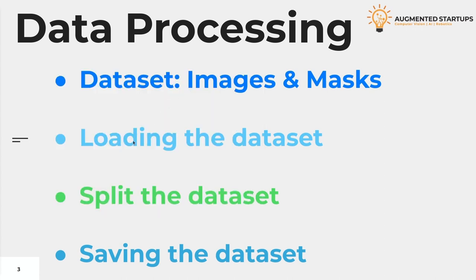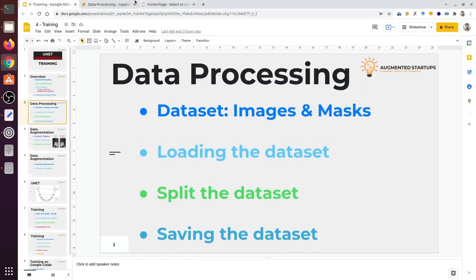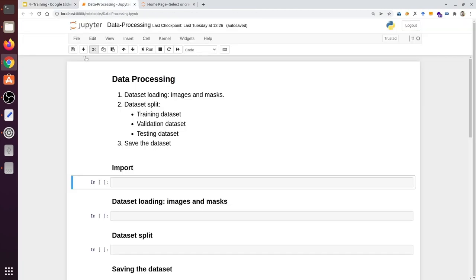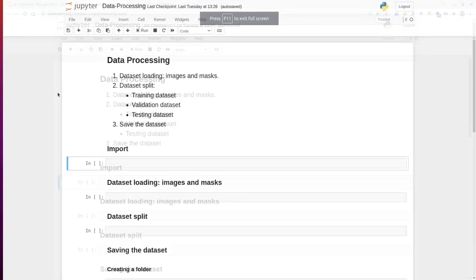In the second step, we are going to load this dataset. In the third step, we will split this dataset into three different sets — training, validation, and testing. And at last, we are going to save these three datasets into three separate folders, which we will use for training our architecture.